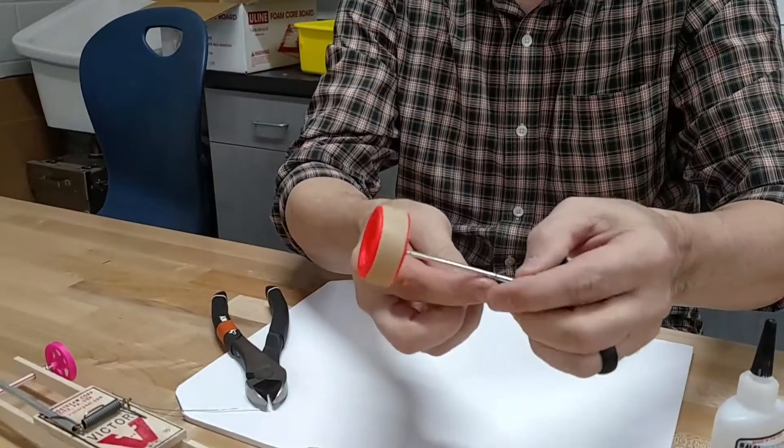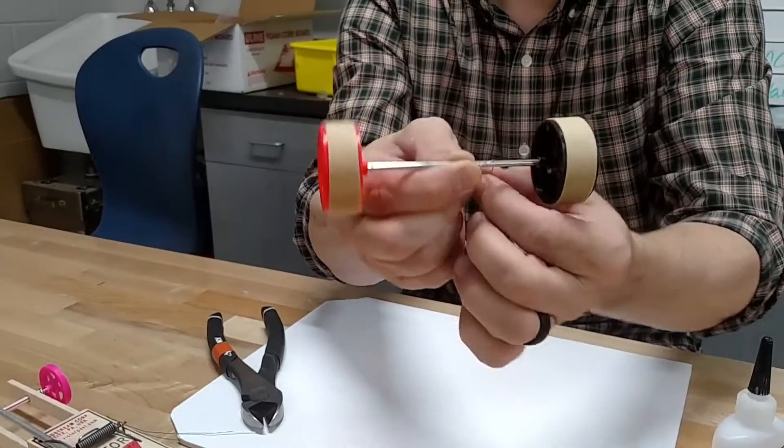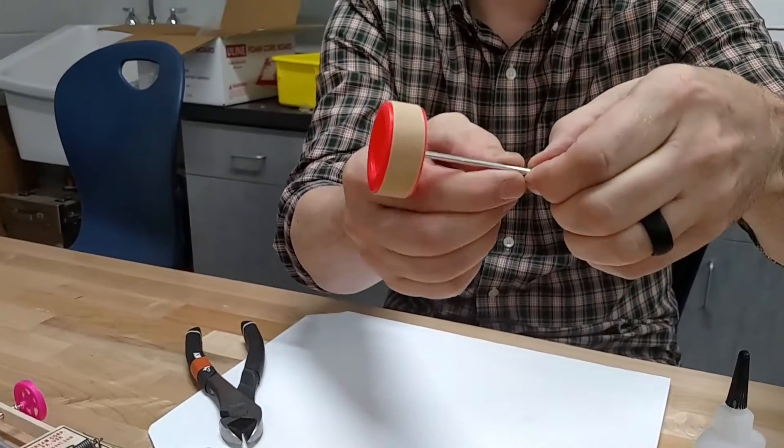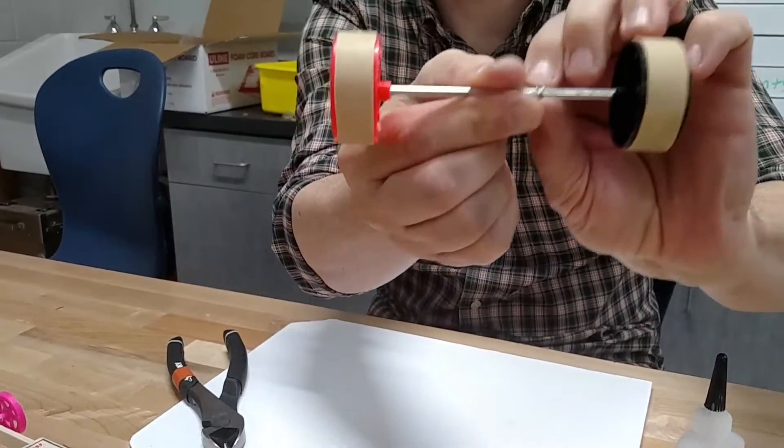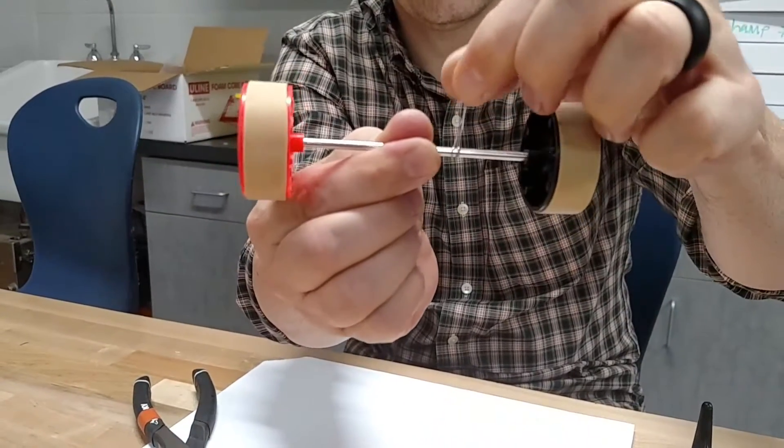And what I do is I'm going to wrap this around here twice. So there's one and two times. You could probably even do three. That's just going to help hold the super glue. So I know my fingers are in the way, but hopefully you can see that right there. I just wrap this around a couple of times.